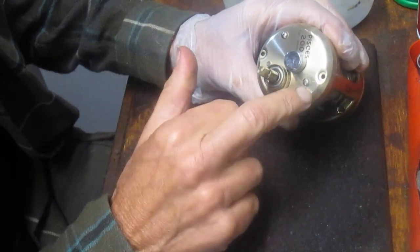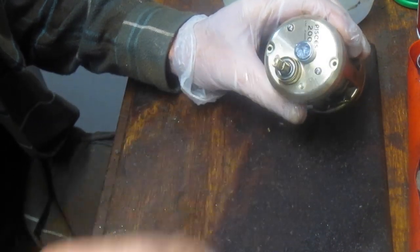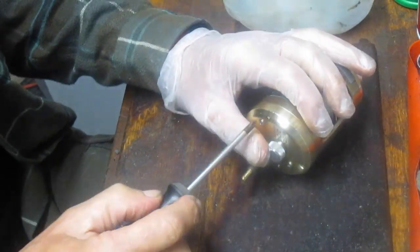We've taken the two case screws out. You have to take the two spring screws, inner posts, in order to remove the side plate.